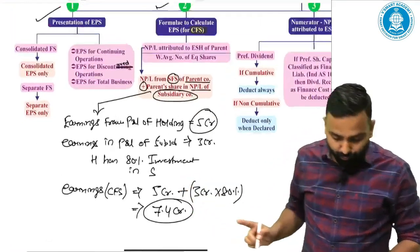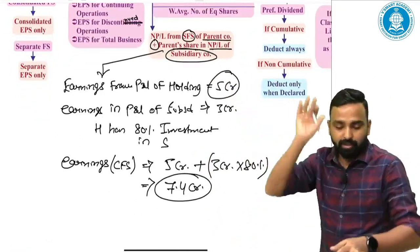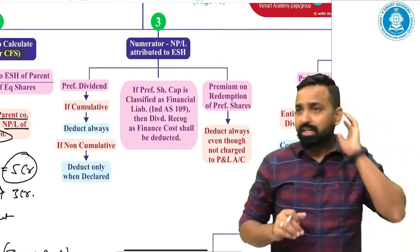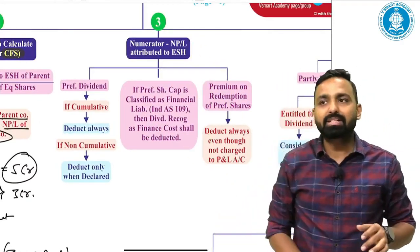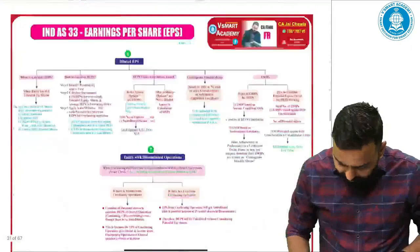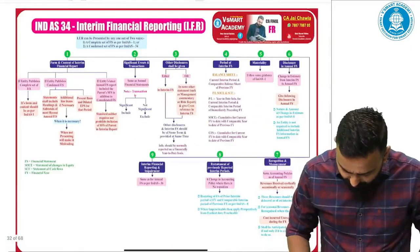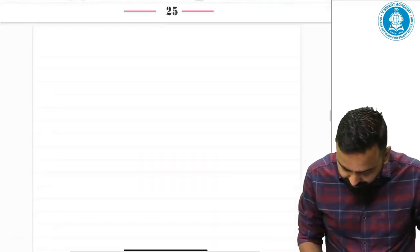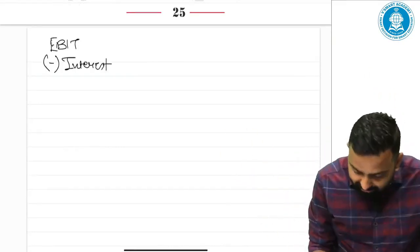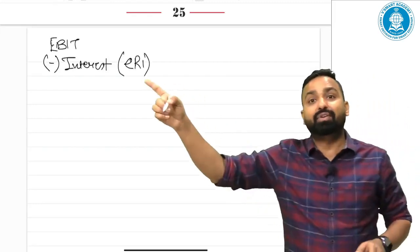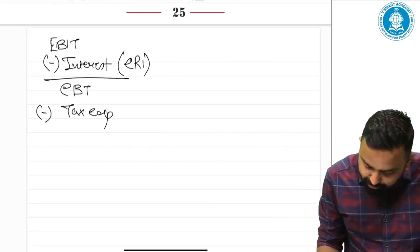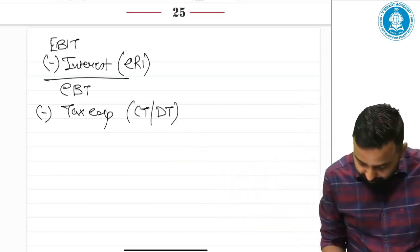Now let us come to the next basic point regarding the numerator - how we calculate the earning. Everybody knows: EBIT minus interest. Whenever you calculate interest, you should calculate it based on effective rate of interest (ERI) from the financial instruments chapter. Then minus earning before tax, then minus tax expense. Whenever you write tax expense, you must know that current tax as well as deferred tax must be written. Then you will get EAT.